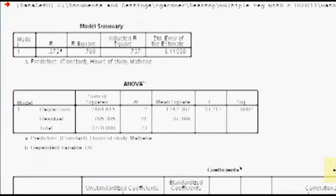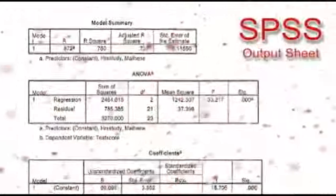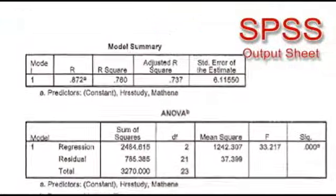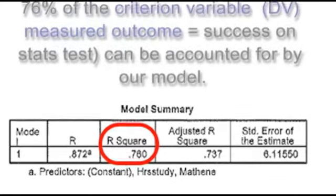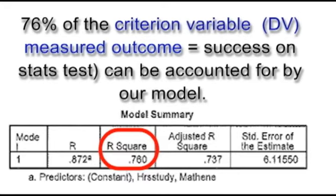And now we're going to interpret the output sheet, which of course, is the fun part. So starting from the beginning at the top of the SPSS output, you'll see the model summary box. From here, if you look at the R square, it's 0.76. What that means is that 76% of the criterion variable, in this case, success on the stats test, 76% of the variance in that variable was accounted for by our model alone.